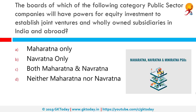The boards of which category of public sector companies will have powers for equity investment to establish joint ventures and wholly owned subsidiaries in India and abroad? The correct answer is both Maharatna and Navratna companies. Public sector unit companies are divided into three categories: Maharatna, Navratna, and Miniratna, with Miniratna having further categories of 1 and 2.